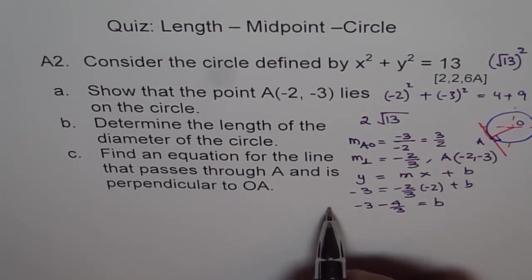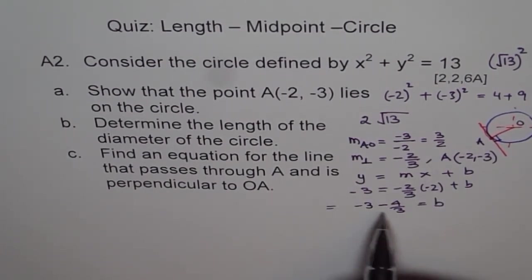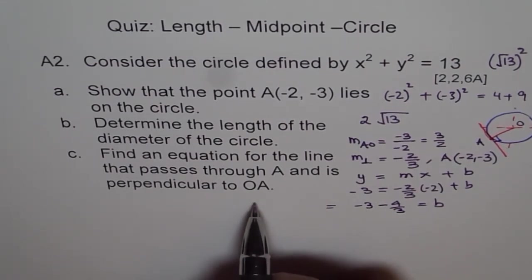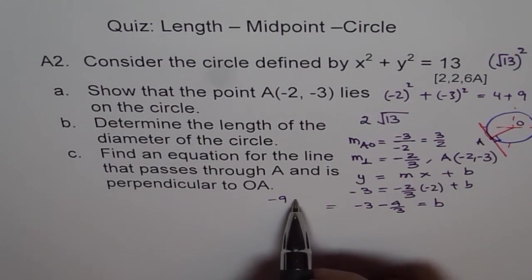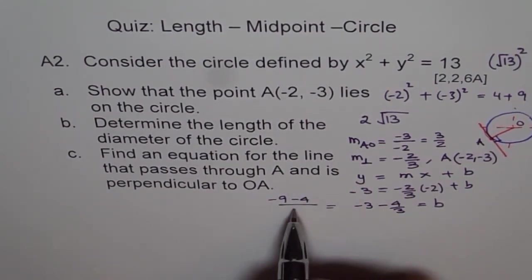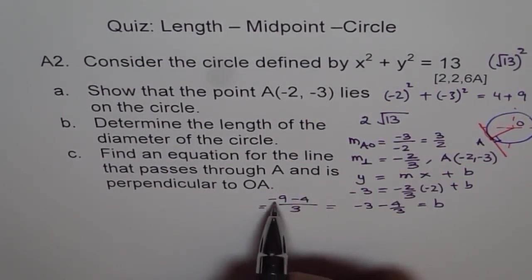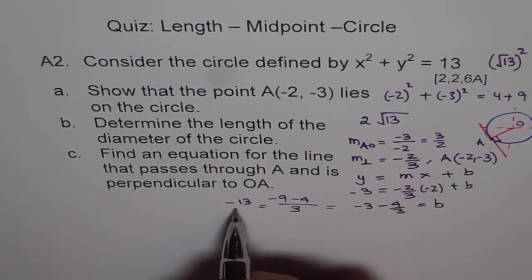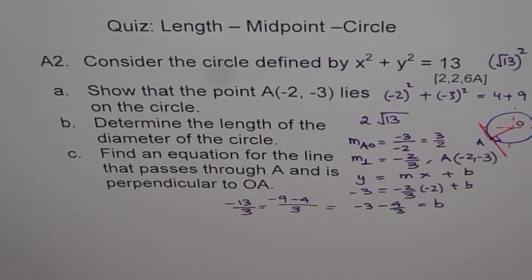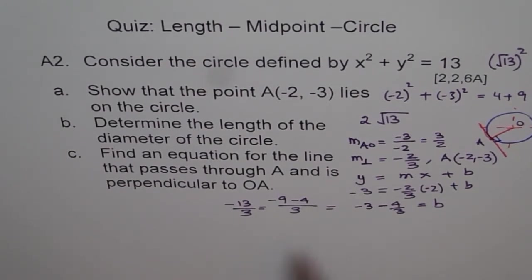Minus 4 over 3 is equal to b, right? Now you can solve this, let me solve it here. So 3 times 3 is 9, so it's minus 9 minus 4 over 3. Which is minus 9 minus 4 is minus 13. Minus 13 over 3.